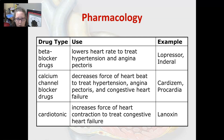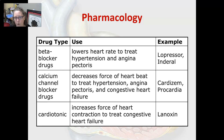Beta-blocker drugs lower heart rate to treat hypertension and angina pectoris — examples are Lopressor and Inderal. Calcium channel blocker drugs decrease the force of the heartbeat to treat hypertension, angina pectoris, and congestive heart failure — examples are Cardizem and Procardia.